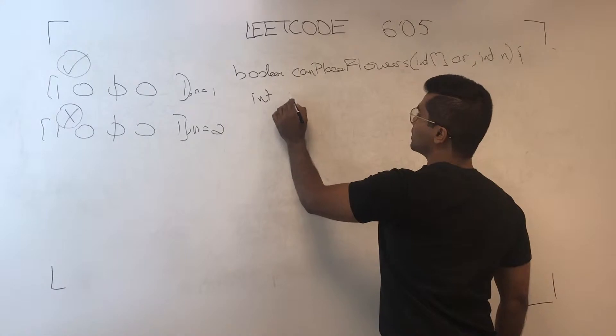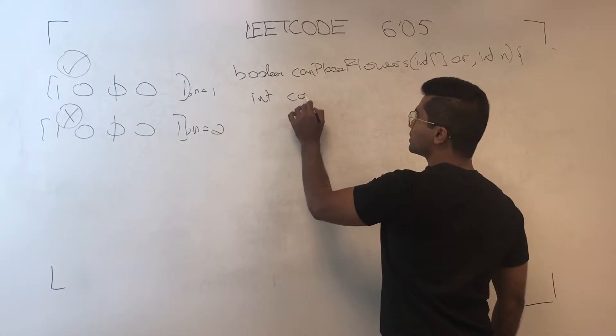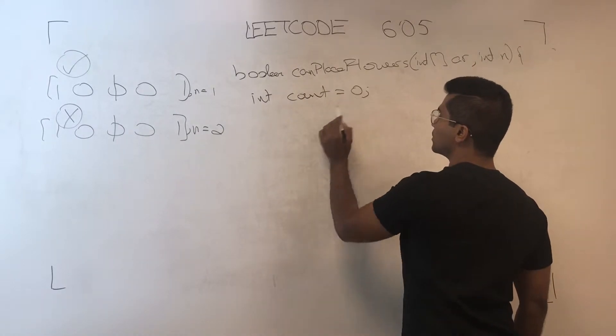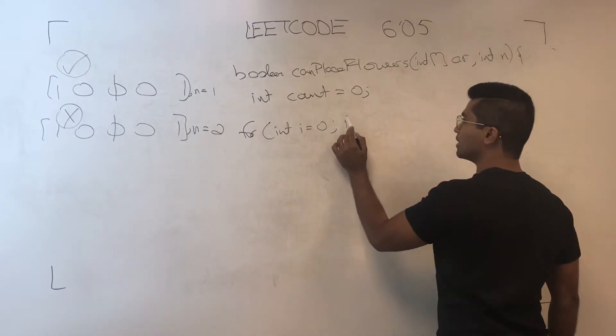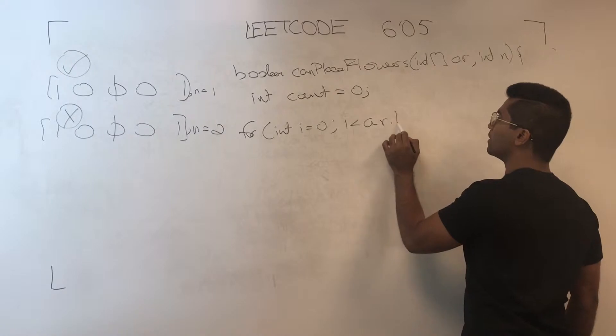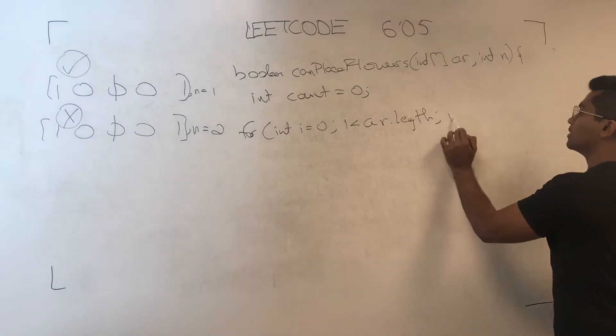So int count, let's just call it count, is zero. And we'll loop through. For int i is equal to zero, i is less than ar dot length, i plus plus.